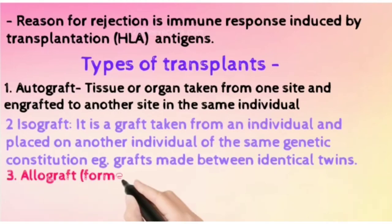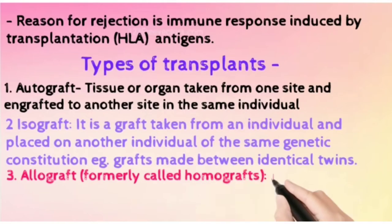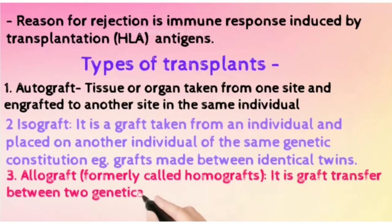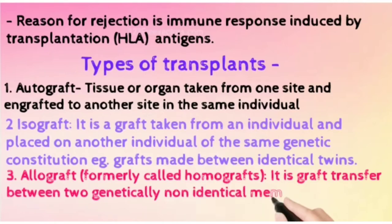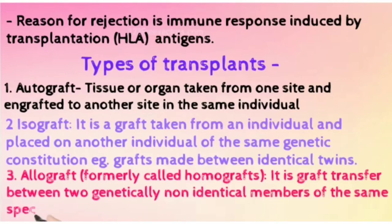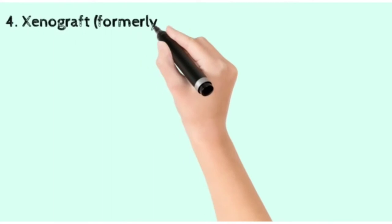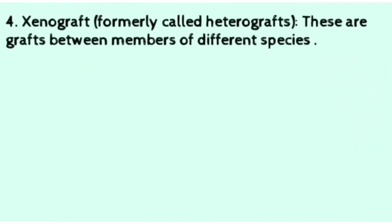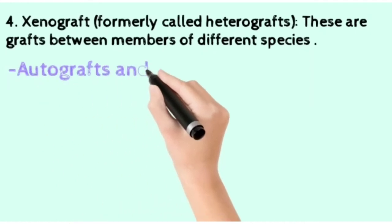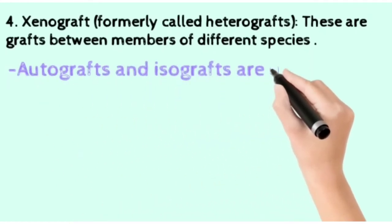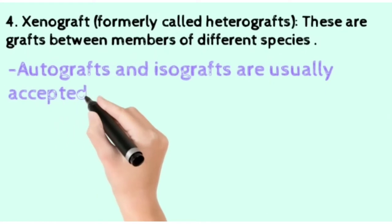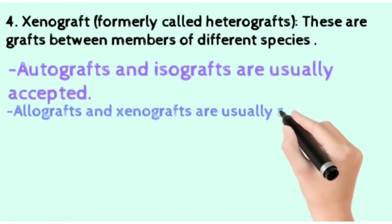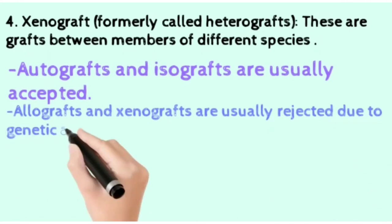Then allograft, formerly also known as homograft, is a graft transfer between two genetically non-identical members of the same species — same species but genetically non-identical. Then xenograft, where the graft is between members of different species. Autografts and isografts are usually accepted, while allografts and xenografts are rejected due to genetic and antigenic incompatibility.